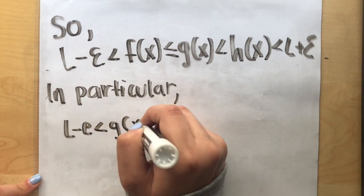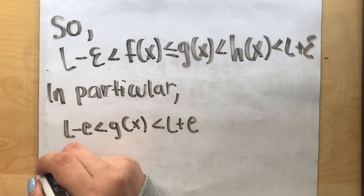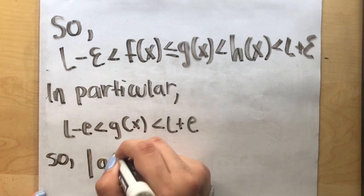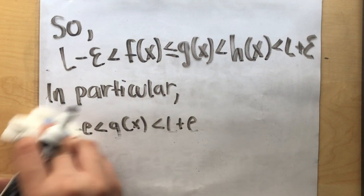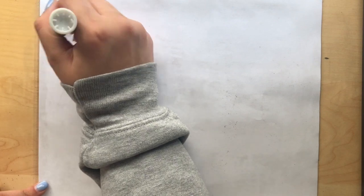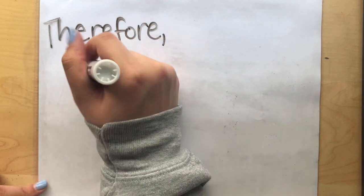In particular, L minus epsilon is less than g of x which is less than L plus epsilon. So, the absolute value of g of x minus L is less than epsilon. Therefore, the limit of g of x as x approaches a is equal to L.